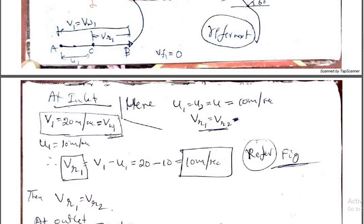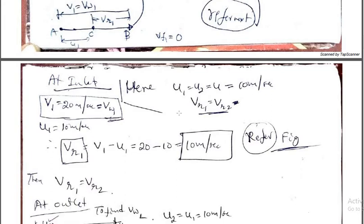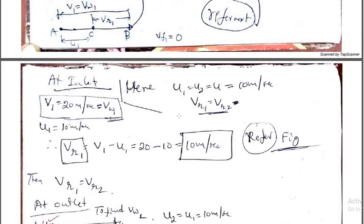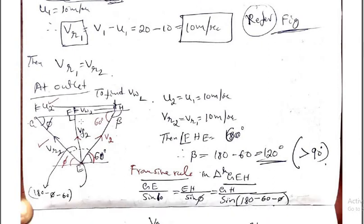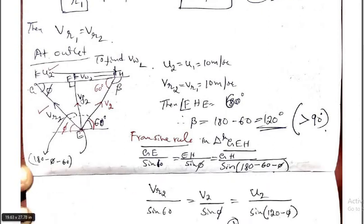Nothing is mentioned about the vane being symmetric, but we will take U1 equals U2 equals U, meaning vane velocity at inlet and outlet are the same — 10 meter per second. Since the vane is smooth, we consider Vr1 equals Vr2. Once the inlet is solved, we consider the outlet. The jet is leaving the vane at an angle 60 degree, so this angle is 60 degree. Draw a line — that angle also equals 60 degree. So the total angle is 180 degree at junction H.